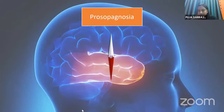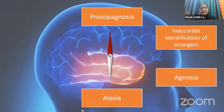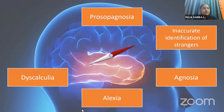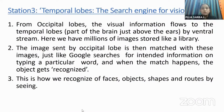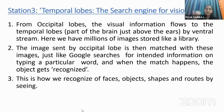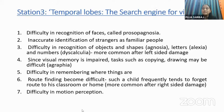Station 3 is the temporal lobe. It handles identification — difficulty recognizing faces is called prosopagnosia; inaccurate identification of strangers is agnosia; difficulty recognizing letters is alexia; numbers is dyscalculia; and agraphia. The temporal lobe works like a Google search — you enter a query and the result comes out. If a child has a temporal lobe problem, they will have difficulty recognizing faces, object shapes, and routes.